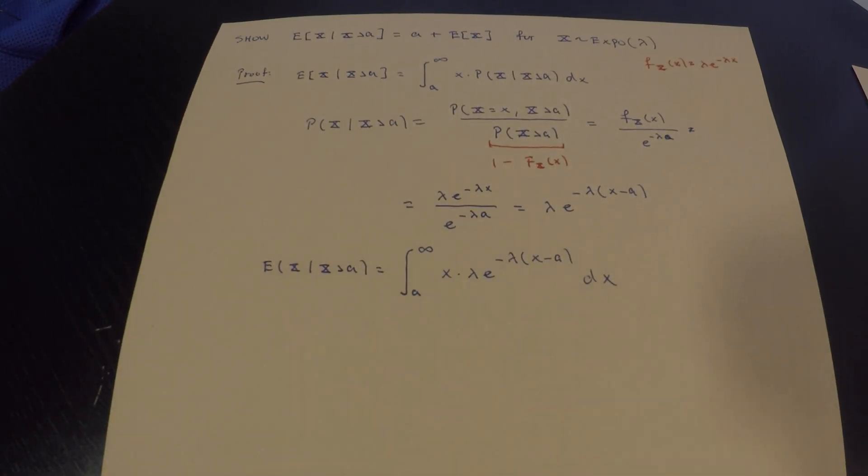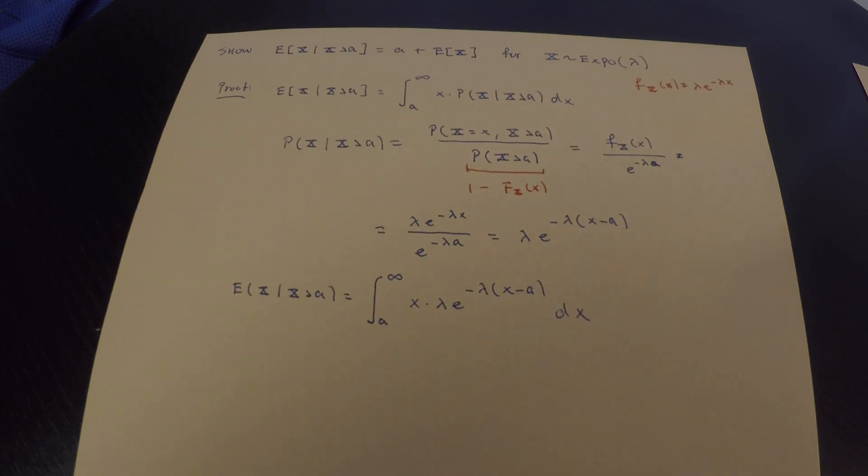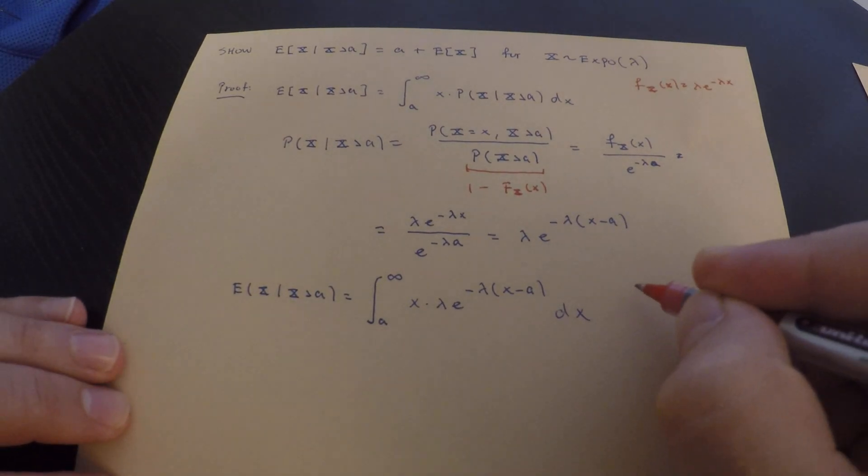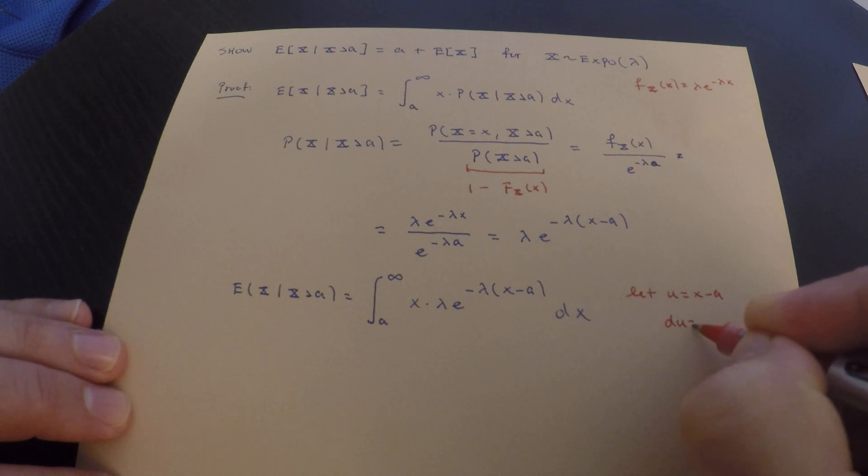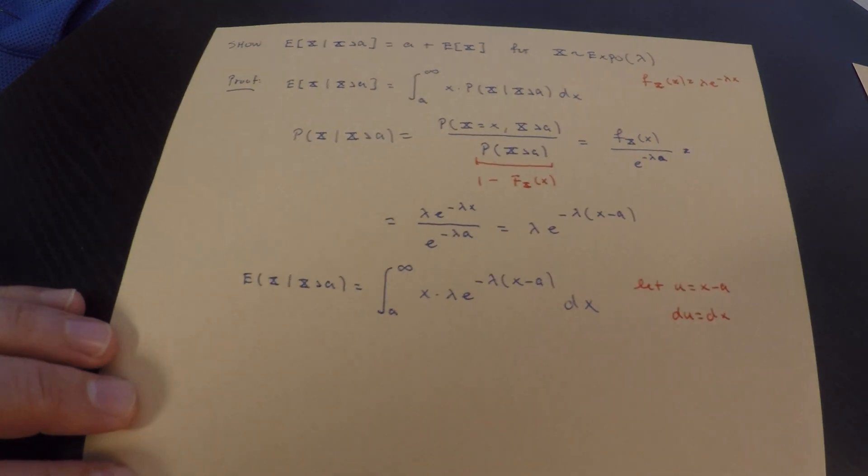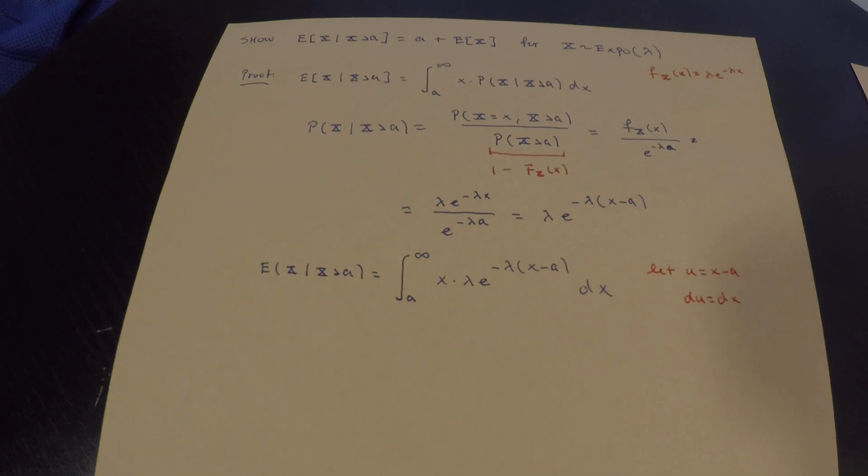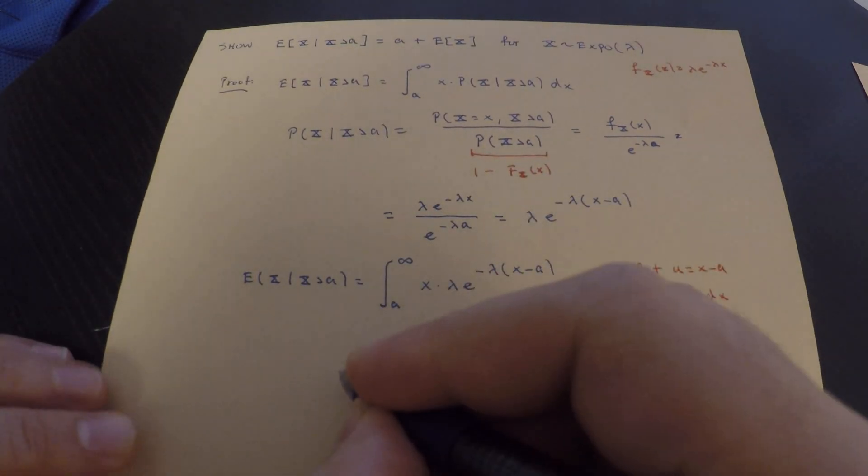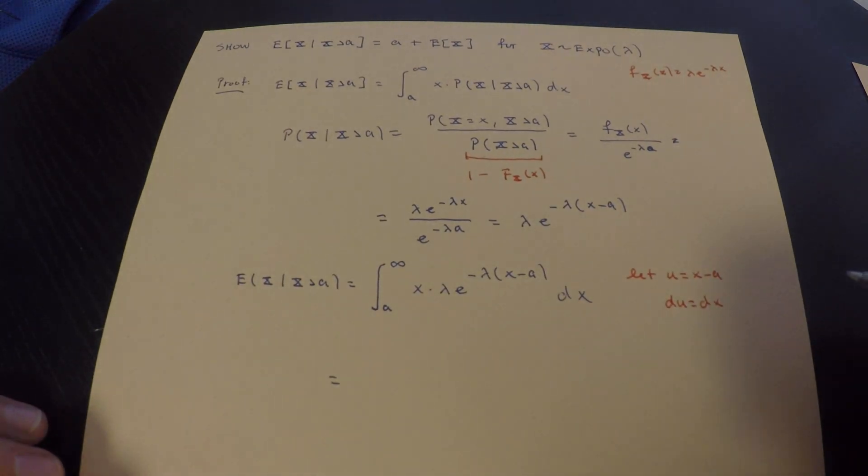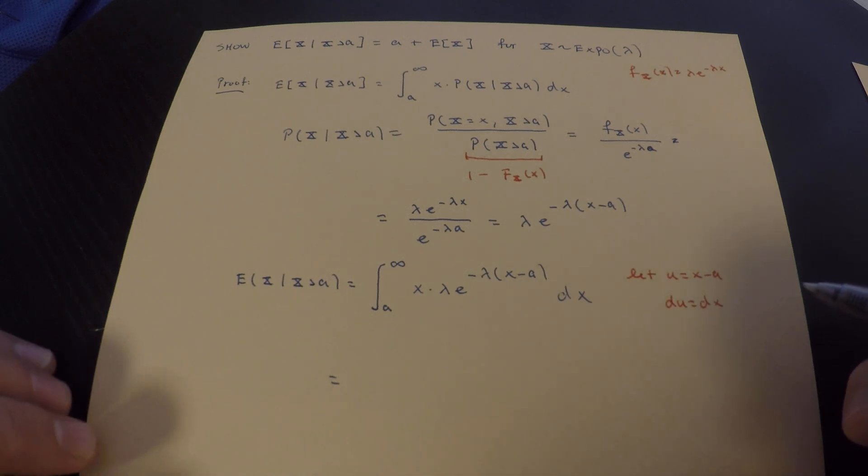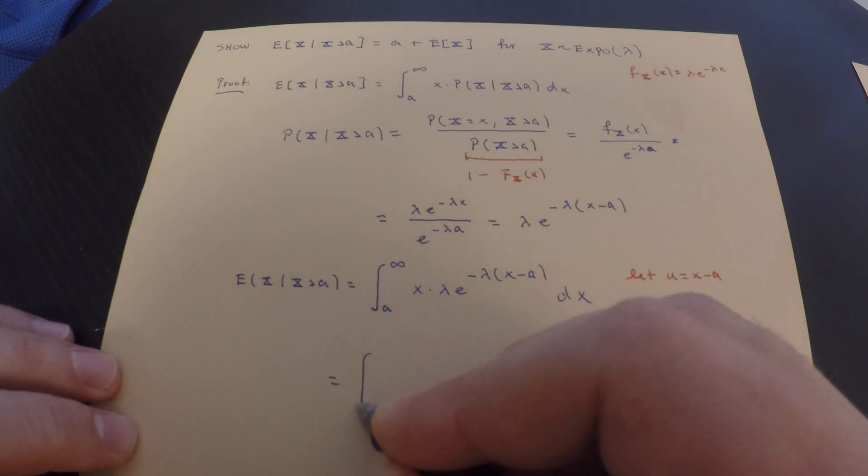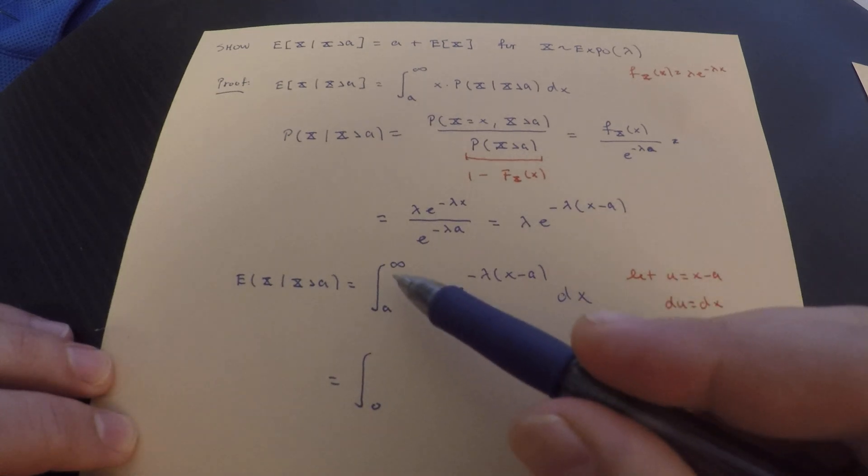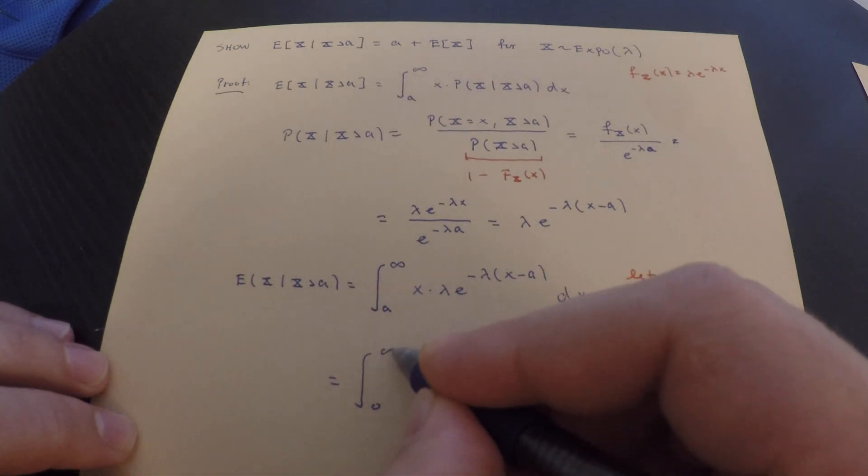This could be computed easily. I don't actually really want to compute any integrals though. I'm going to let u equal x minus a, so that du is equal to dx. Let's make a substitution. We have the following. Now, you guys are all tremendous calculus students, so you know that when you make a substitution, you absolutely need to change your bounds of integration. When x is a, u is 0. So this becomes 0. When x tends to infinity, u also tends to infinity.